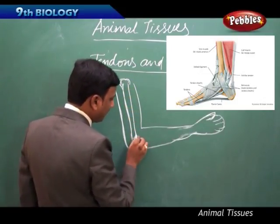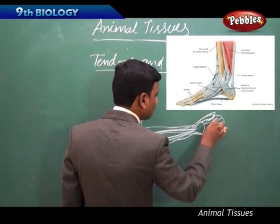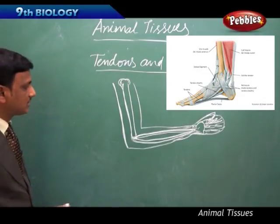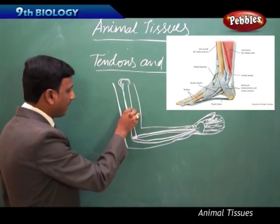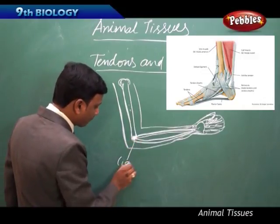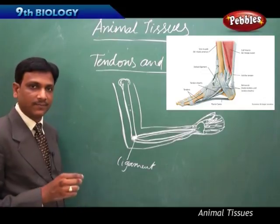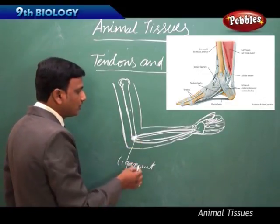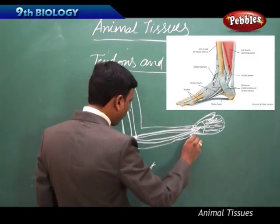Here we find a joint in the elbow. We find the bones of our hand inside — there is the upper hand bone and the lower hand has two bones. Here is a joint, and this joint is formed by ligaments. Ligaments join two different bones. A ligament is another type of connective tissue made up of fibers that are very elastic in nature, used to attach two different bones. Even the wrist bones are attached to each other by bands of ligaments.